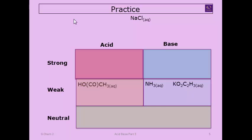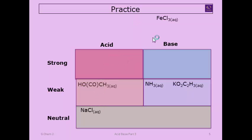Sodium chloride: sodium is group one — neutral; chloride is in the group-seven grouping — neutral. Overall this salt is neutral and would not change the pH of water. Next, iron(III) chloride: Fe³⁺ is a transition metal with a 3+ charge — slightly acidic; chloride ions are neutral. Overall this salt would be weakly acidic.